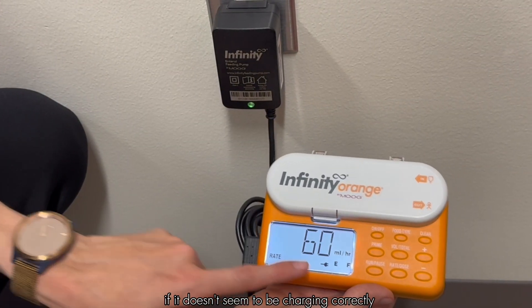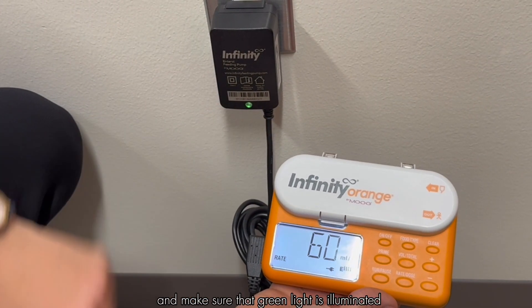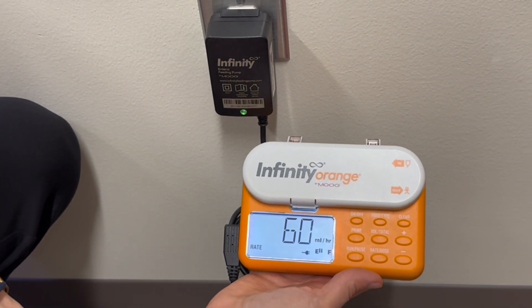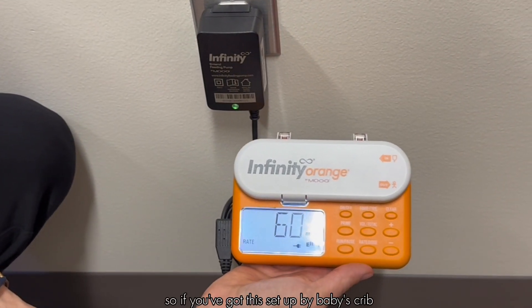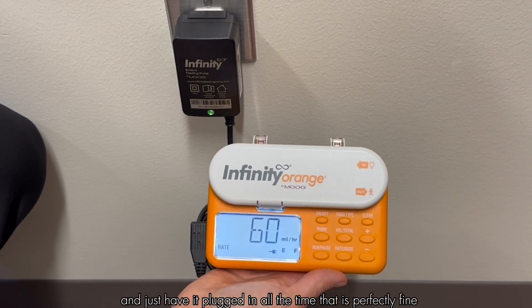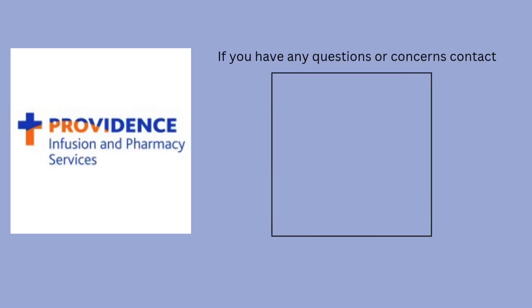If it doesn't seem to be charging correctly you can look at the charger and make sure that green light is illuminated to indicate that it's functioning. It can be plugged in while it's running, so if you've got this set up by baby's crib and just have it plugged in all the time, that is perfectly fine.